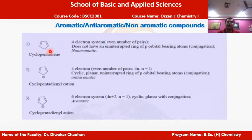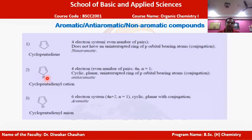Cyclopentadienyl cation also has two pi bonds giving four pi electrons, following the 4n rule. The positive charge at one corner allows continuation of the pi electron cloud above and below the ring without interruption. Due to the uninterrupted pi electron cloud and following the 4n rule, cyclopentadienyl cation is anti-aromatic.